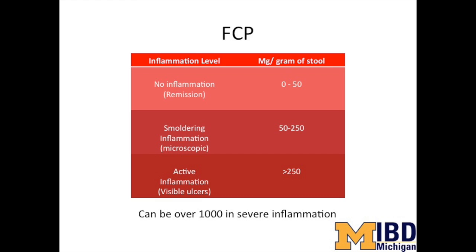A calprotectin over 250 is active inflammation with ulcers that are visible through a colonoscope. Higher levels suggest more inflammatory activity. In patients having flares, it's not unusual to see values over 1,000 or even above 2,000, which is outside the range of the test.